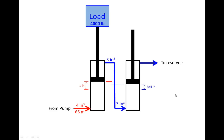Three cubic inches on a 4 square inch area causes the second cylinder to move only three-fourths of an inch. So the first cylinder in the series moved farther and faster than the one on the right. And because 3 cubic inches went into the second cylinder, and the area on top is only 75% of the area on the bottom due to the rod, only 75% of the fluid comes out — meaning only 2.25 cubic inches return to the reservoir.